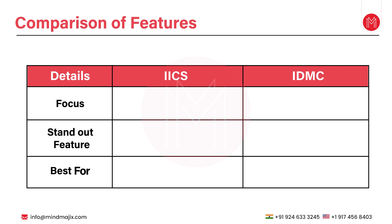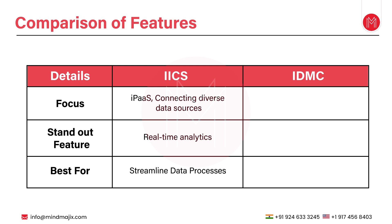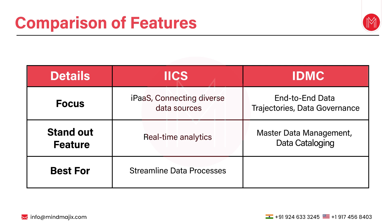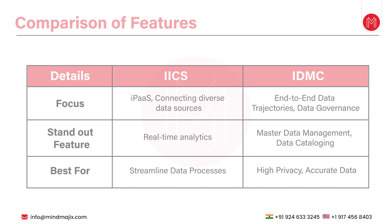Comparing the features: IICS is built around a versatile Integration Platform as a Service (iPaaS) system, enabling enterprises to seamlessly connect multiple data systems and cloud services. One of its standout features is real-time analytics for both structured and unstructured data, providing enterprises across various sectors with tools for responsive analytics and making informed decisions. IDMC, on the other hand, is distinguished by its focus on end-to-end data trajectories and comprehensive data governance. If data privacy is a priority, IDMC offers robust features to protect and manage your data, along with data cataloging and data quality policies crucial for maintaining the reliability and value of your data.